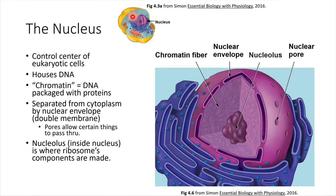The cytoplasm is the sort of teal green color, with all these organelles floating inside. And then right here in purple is the nucleus. The nucleus is the very special place where DNA is housed.